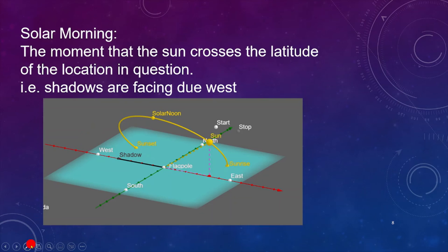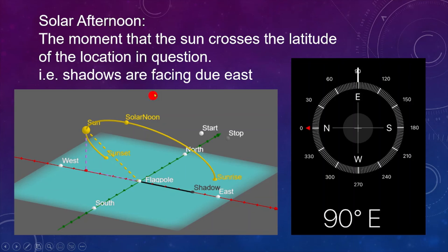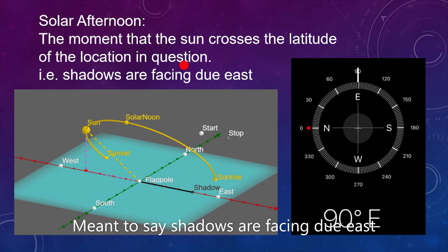Solar afternoon is the moment that the Sun crosses the latitude of the location in question, i.e., the shadows are facing due west.